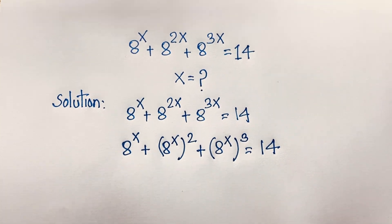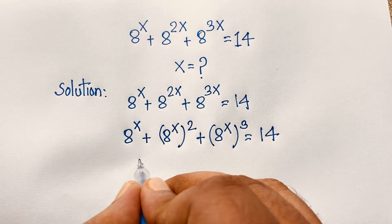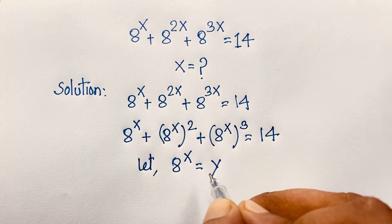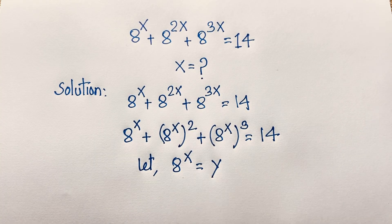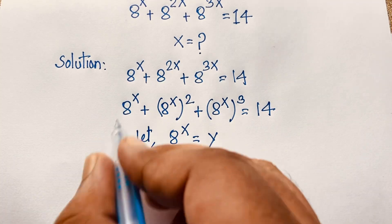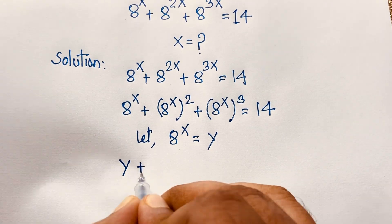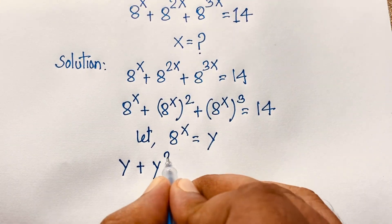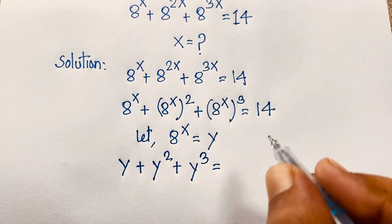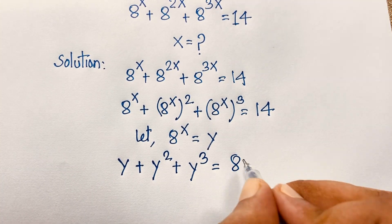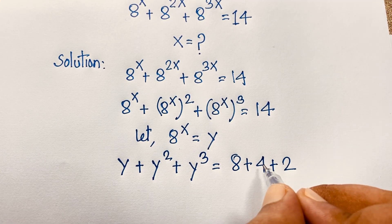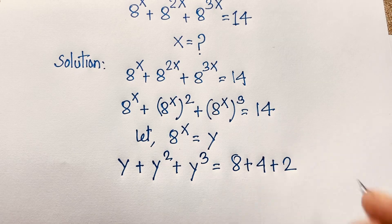Since 8^x appears in each term, we let y = 8^x. Substituting, we get y + y² + y³ = 14. Now, 14 can be written as 8 + 4 + 2, since 8 + 4 = 12 and 12 + 2 = 14.